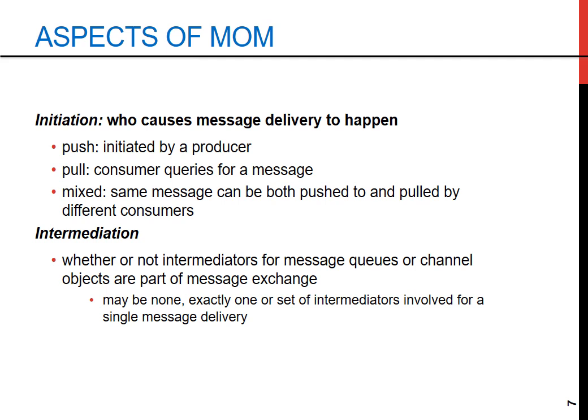The second aspect is intermediation, which involves the use of intermediaries like message queues or brokers in the message exchange, adding another layer to the architecture of the application. For example, in an email system, a server acts as an intermediary — storing and forwarding messages between senders and receivers. Some message oriented systems use intermediaries to manage message flows, while others might connect producers and consumers directly.